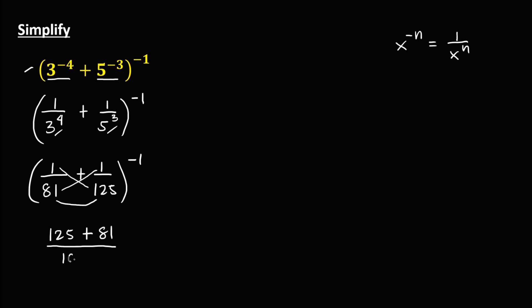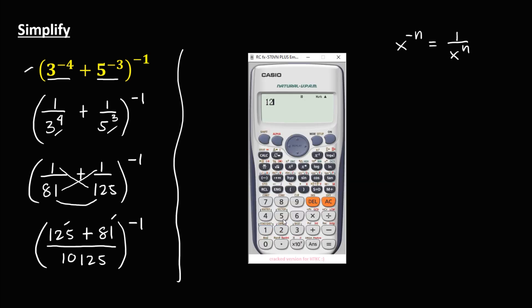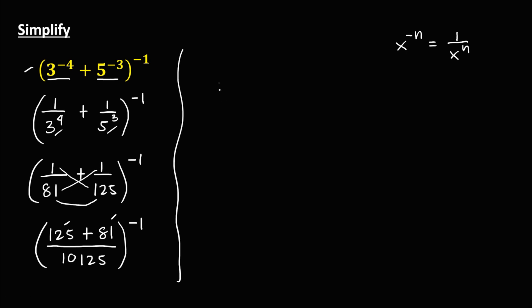so over 10,125, then to the power negative 1. Since the exponent is negative 1, we just need to find the inverse of this equation, so the final answer is 10,125 over 206.